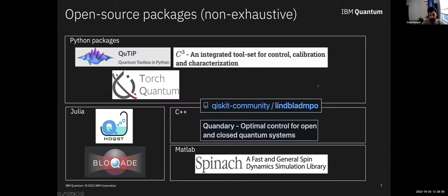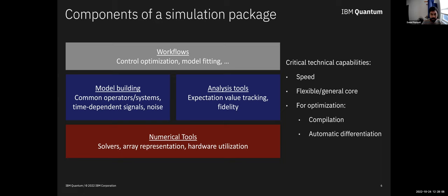At the higher level, you might be looking for things that enable certain higher level workflows that incorporate these lower level things - control optimization, model fitting, things like this. This is a computation focused audience, so I don't need to tell you this, but whenever I'm talking to device physicists, I always need to make this clear - critically, the technical capabilities we need are speed and flexibility. Being able to specify things in a really generic way because these systems have a lot of variation. You really want things to be able to be compilable and automatically differentiable so you can do these more complicated things more quickly.